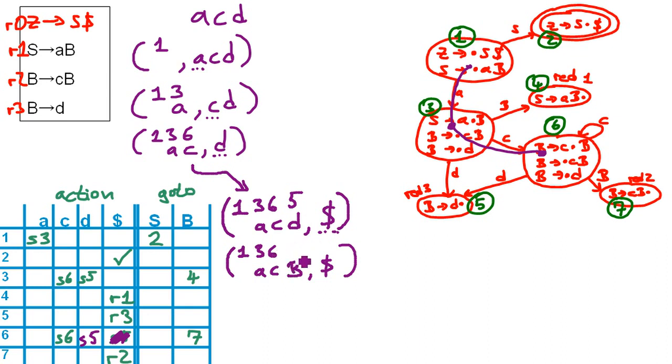The problem is we had a reduction by rule number three, and as you see, we have no state in here that we can write. So we have to figure out the state somehow. For doing that, we check out state number six, the last state in our stack.